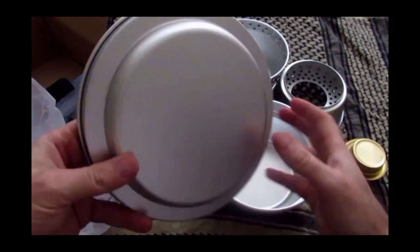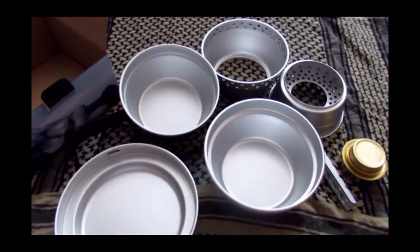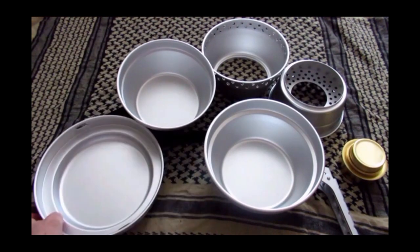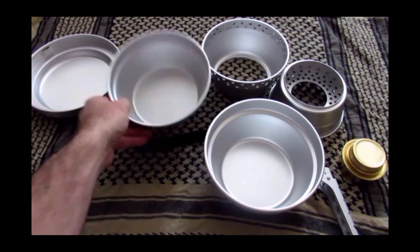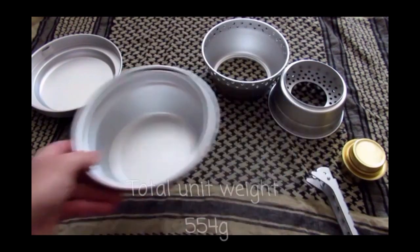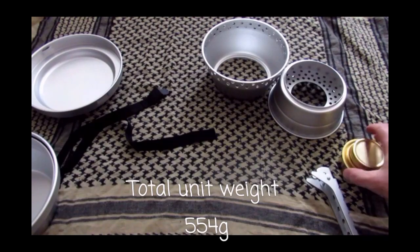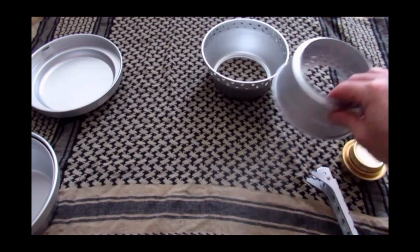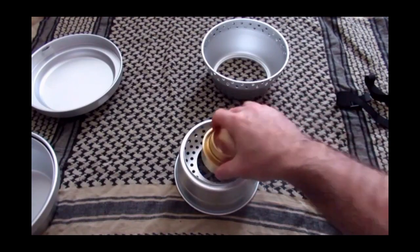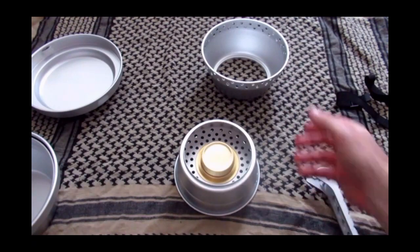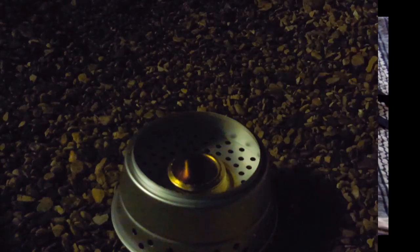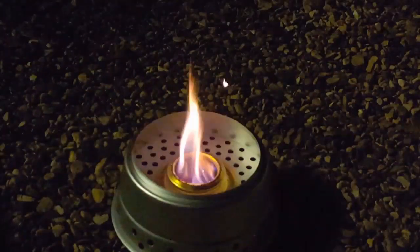There you go, that's what you get in the box. So let's put it together and see how it looks. Just get this out of the way first. So there's the base, your burner, then your wind screen stroke pot holder on top.